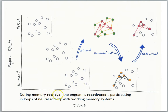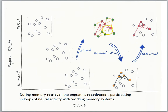During memory retrieval, the engram is reactivated, participating in loops of neural activity with the working memory systems. While the cells in the dormant state are not currently participating in loops, when we do retrieve the memory, those engram cells are reactivated and participate in the loops of activity that constitute the working memory system. The engram cells — a subset of cells that were active in the original experience — are the ones being reactivated.